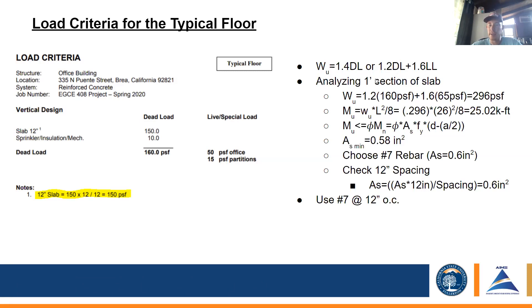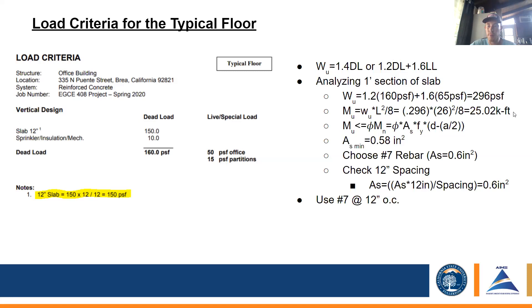Since we're analyzing a one-foot section of the slab, we converted all the units and plugged in our 160 and 65 to get 296, then used Wu times L squared over 8 to get our maximum moment. From there we calculated it was 25.02 kip-feet per foot.